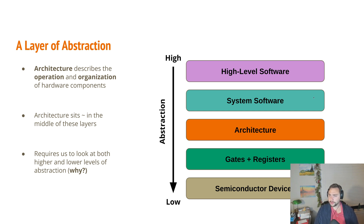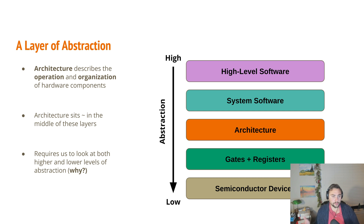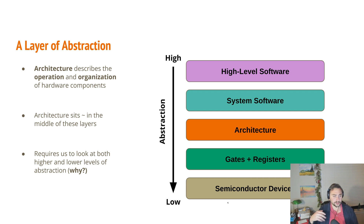Below our system software is going to be our architecture. Our architecture provides a model of hardware that's going to be used by our system software. It's also providing the blueprints of what we're going to implement at the lower levels of abstraction — how our hardware structures will be implemented in terms of gates and registers, and how eventually it will get turned into an actual chip and wind up in silicon.